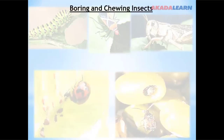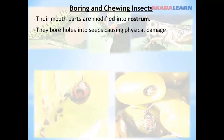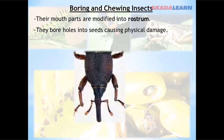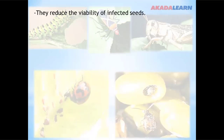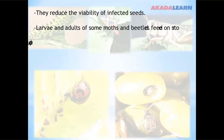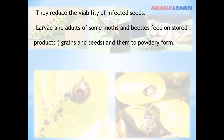The boring and chewing insects have mouth parts modified into a rostrum. They bore holes into seeds, causing physical damage, and they reduce the viability of infected seeds. Larvae and adults of some moths and beetles feed on stored products — grain and seeds — and turn them into powdery form.